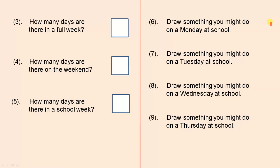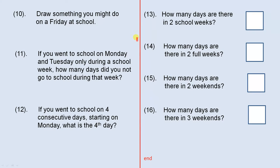Draw something you might do on a Monday at school. Draw something you might do on a Tuesday at school. Draw something you might do on a Wednesday at school. And draw something you might do on a Thursday at school. Finally, draw something you might do on a Friday at school.